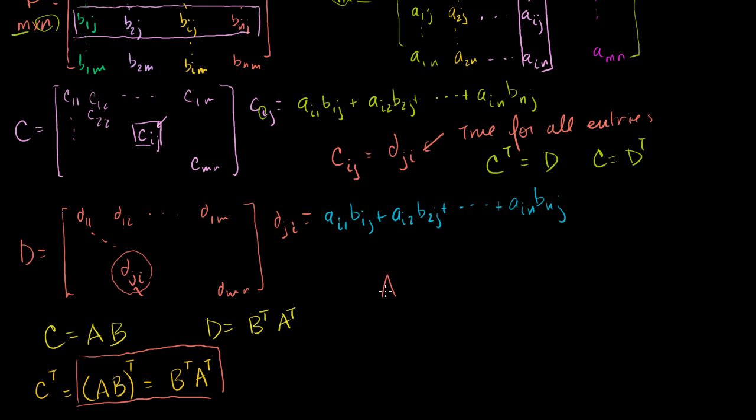If I take the product of two matrices and then transpose it, it's equivalent to switching the order or transposing them and then taking the product of the reversed order, B transpose A transpose, which is a pretty neat takeaway.